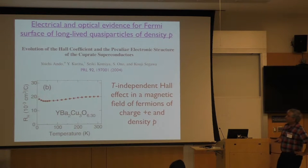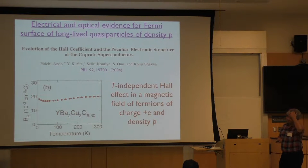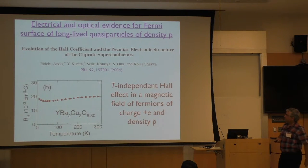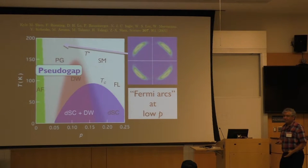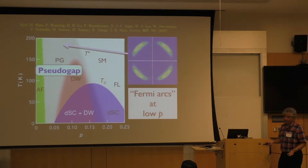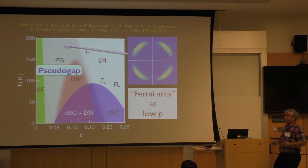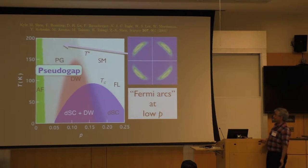Photoemission shows these arc-like features. That's been a long-standing mystery of what this pseudo-gap is. It seemed like the world's most complicated phase that everyone has worked on some time but then gets tired of it because it's so confusing. However, what's been rather remarkable in the last few years is that there's actually some very beautiful simplicity to the pseudo-gap.